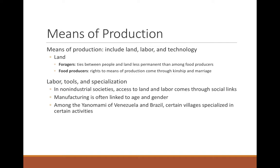In addition to modes of production, we have means of production — the land, labor, and possibly technology used to produce. All food production requires land. Foragers have transient access or ties to the land; there may be some territorial rights of access, but it's not permanent legal ownership. There are historical land rights, but foragers generally let other groups hunt and gather on their land as long as that courtesy is extended in return.